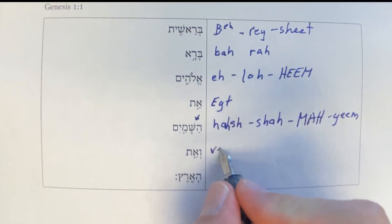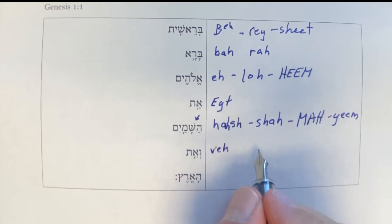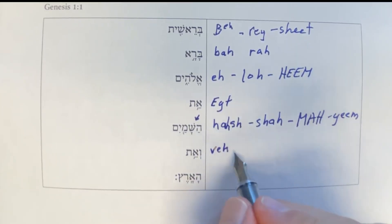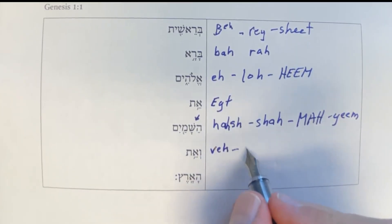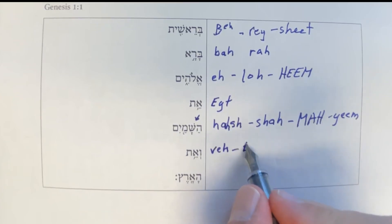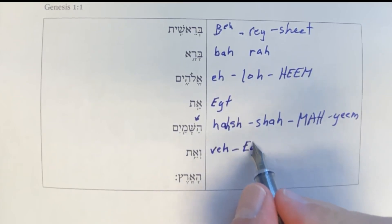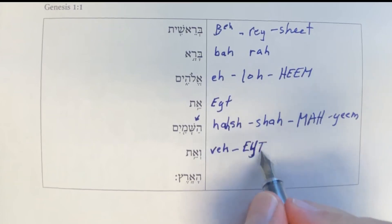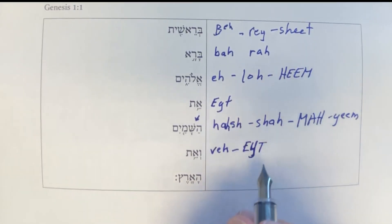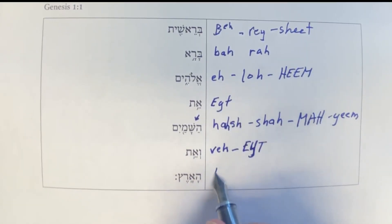Then 'v'et' — that's your accented syllable there. And then 'ha-aretz.'